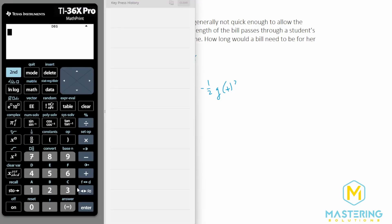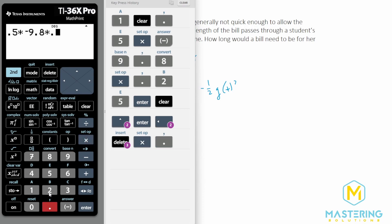So now we go to the calculator and we have 0.5 times negative 9.8 times the reaction time which we said is 0.25 seconds and that needs to be squared. So now the bill needs to be 0.31.